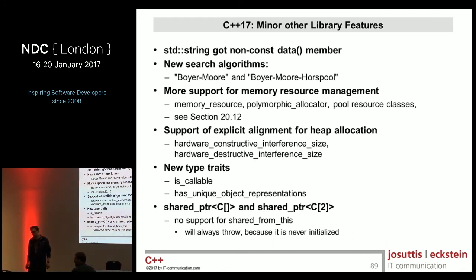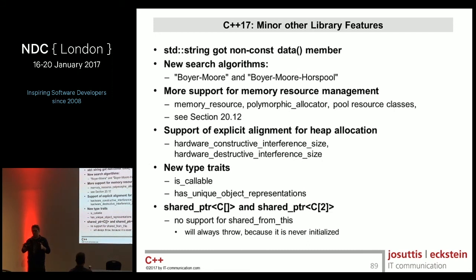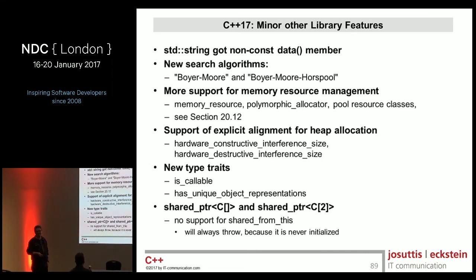A question: if you have a struct with padding — say, a char and then an int — what does has_unique_object_representations return? If there is padding, you don't know what those bits are, so you can't do the memcpy trick — the answer would be false. Also mentioned: hardware_constructive_interference_size tells you how much you can pack into one cache line, and hardware_destructive_interference_size tells you what size ensures two objects are not on the same cache line — useful to avoid false sharing.